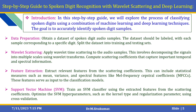Wavelet scattering involves decomposing the signals into multiple scales using Wavelet transforms, then computing the scattering coefficients that capture important temporal and spectral information. For feature extraction, extract relevant features from the scattering coefficients, including statistical methods such as mean, variance, and spectral coefficients like MFCCs. These features serve as input to the classification models. For the Support Vector Machine, train an SVM classifier using extracted features from the scattering coefficients and optimize SVM hyperparameters such as kernel type and regularization parameters using k-fold cross-validation.